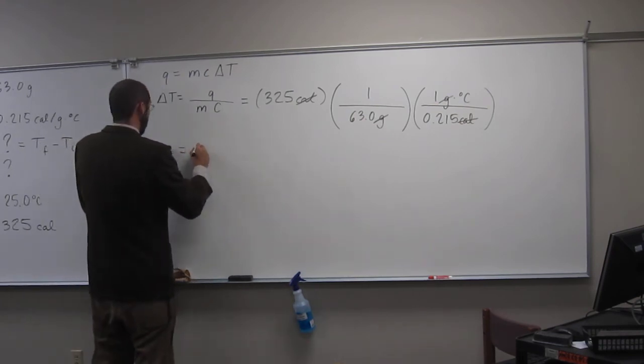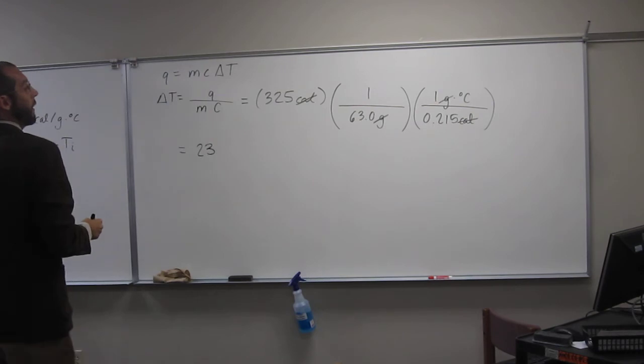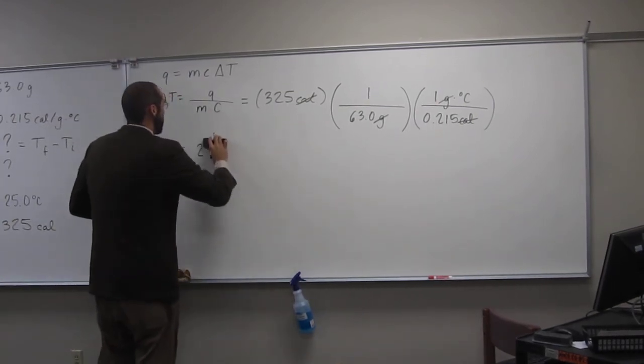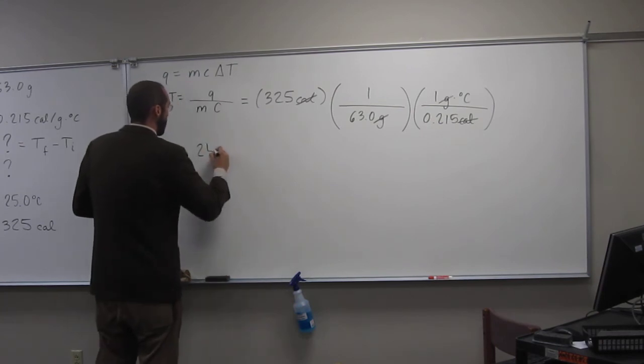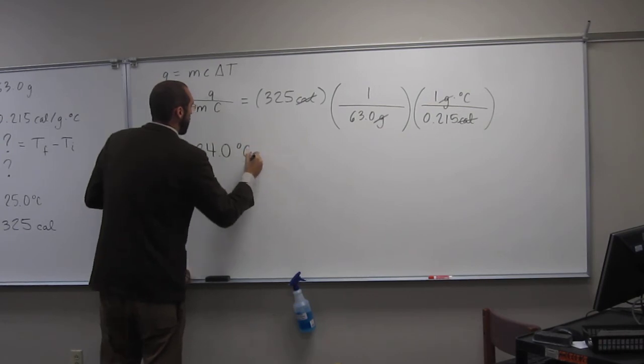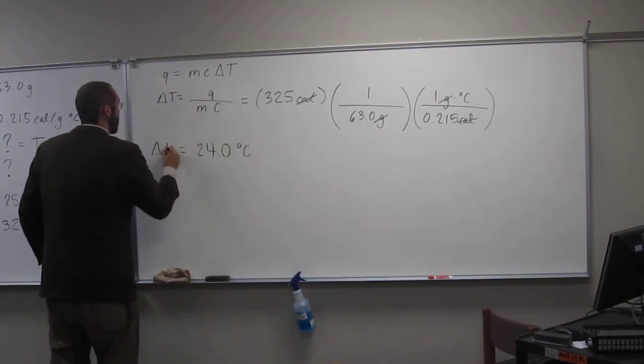325 divided by 63 divided by 0.215. And so, I get 24.0 degrees C is change of T, right?